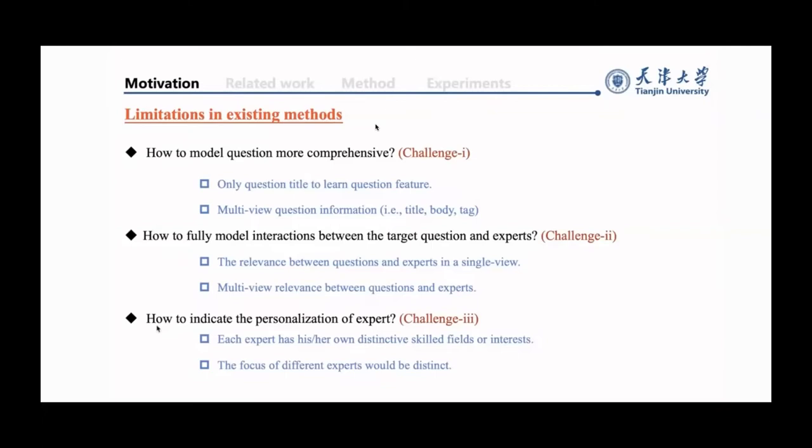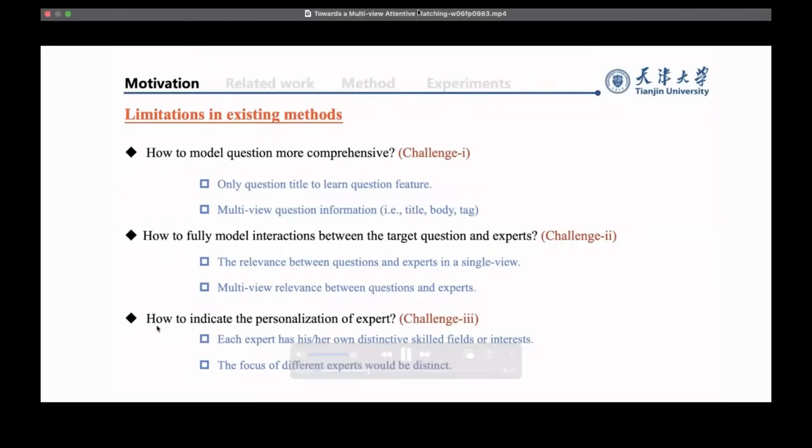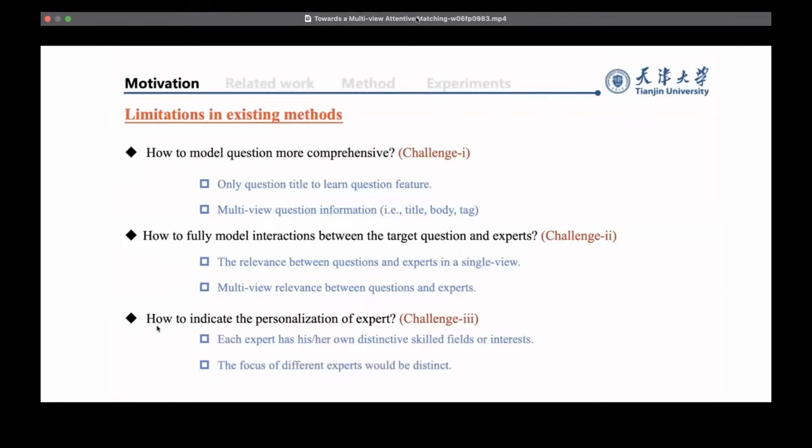However, existing methods usually learn the relevance between questions and experts in a single-view and coarse-grained way. In fact, as denoted above, questions always contain multi-view information, and different views should be matched separately since different kinds of information have different characteristics.